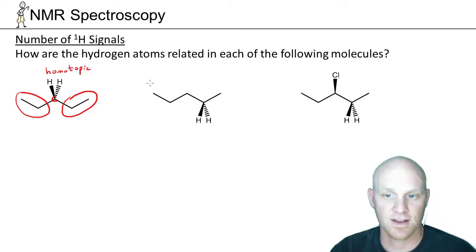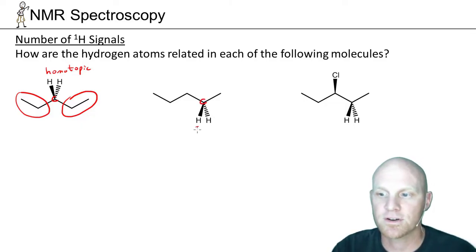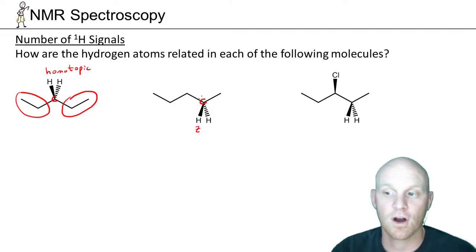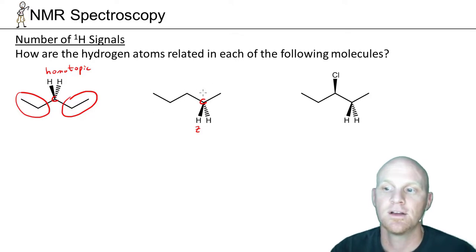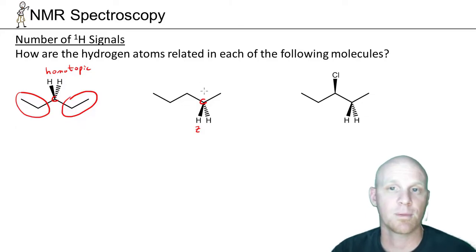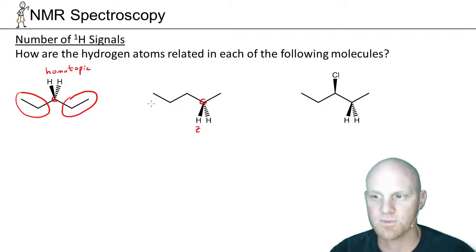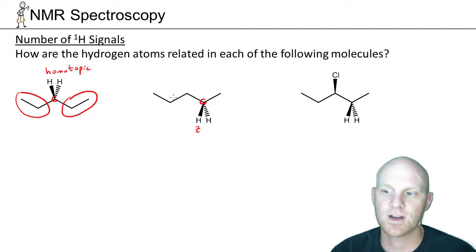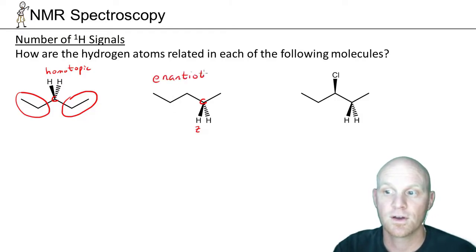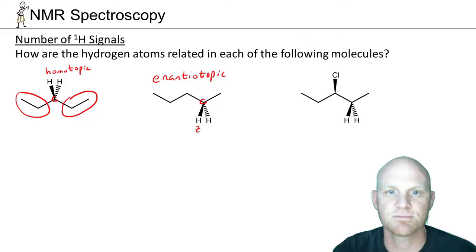In the next example — technically the same molecule, just looking at two different hydrogens — if I replace one with Z, this carbon would have a Z, a hydrogen, a methyl, and a propyl — four different groups — making it a chiral center. So the relationship is either enantiotopic or diastereotopic. There are no other true chiral centers in this molecule, so they end up being enantiotopic and therefore chemically equivalent.